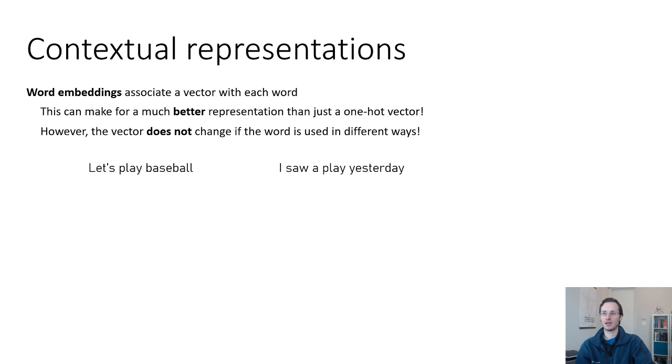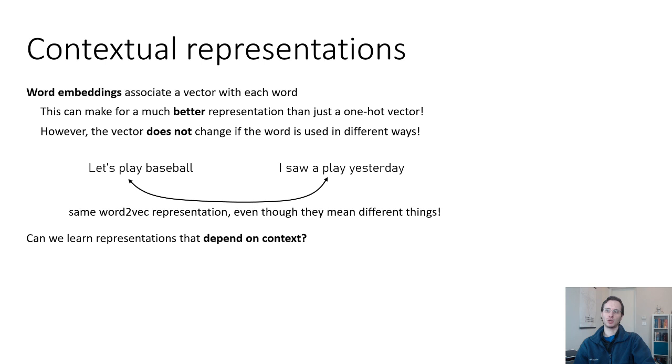So as an example, you have two sentences, let's play baseball, and I saw a play yesterday. It's the same word, technically the word play. It's used in two very different ways. In fact, in one case it's a verb. In the other case, it's a noun. But word2vec would assign the same representation to this, even though these words have very different meanings.